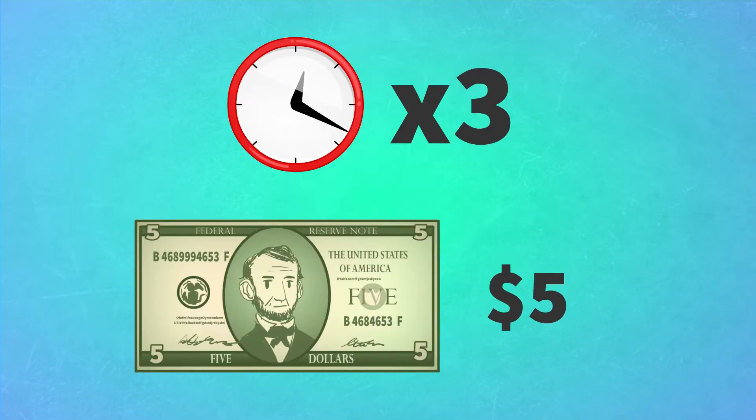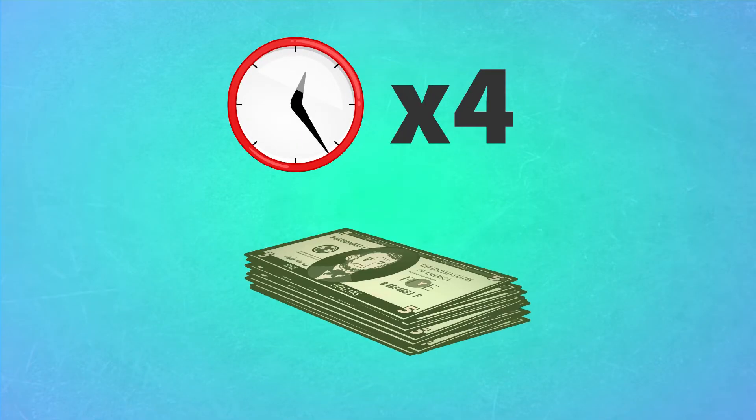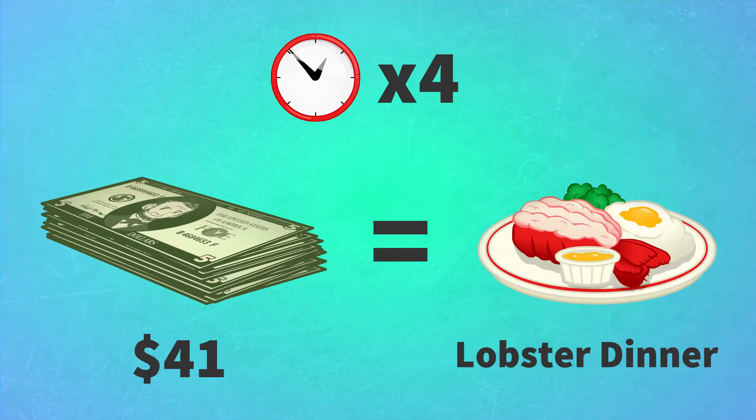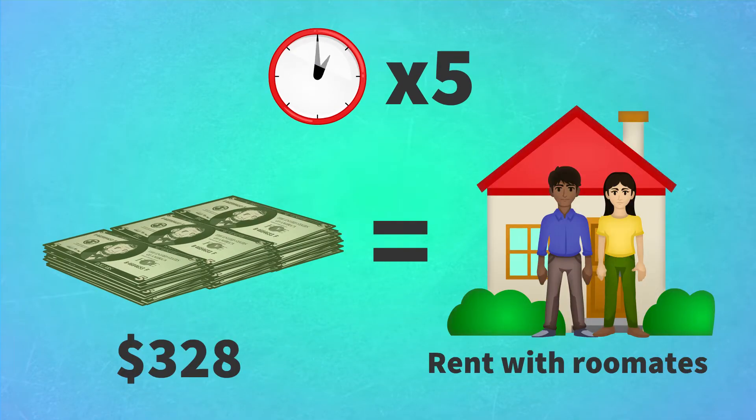But at three hours you have five dollars. That's enough for a sandwich. After four hours, you have almost forty-one dollars, enough for a lobster dinner. At five hours you have almost three hundred and twenty-eight dollars, enough for rent if you don't mind multiple roommates. Bacteria don't.